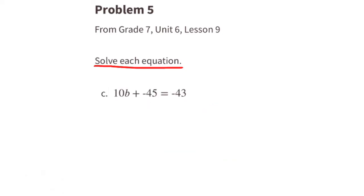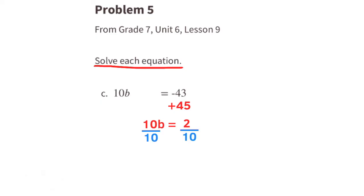Part c: add 45 to both sides — the negative 45 is cancelled on the left, and on the right we have positive 2. Divide both sides by 10: on the left it becomes b, and on the right it becomes one-fifth. So b equals one-fifth.